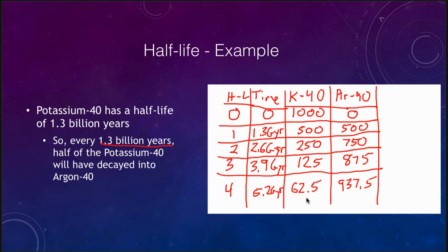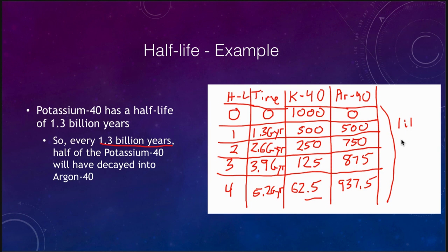You might wonder how we get half of an atom — it is because this is a probability. Each atom remaining has a 50% chance of decaying each half-life. So at four half-lives you have an equal chance of there being 62 or 63 potassium-40 atoms present, and correspondingly either 937 or 938 argon atoms — you cannot have an atom halfway decay. When we determine that ratio of daughter to parent atoms, that tells us where we fall on the decay curve and what the age would be. For instance: a 1-to-1 ratio means one half-life old; a 1-to-3 ratio means two half-lives; a 1-to-7 ratio means three half-lives.